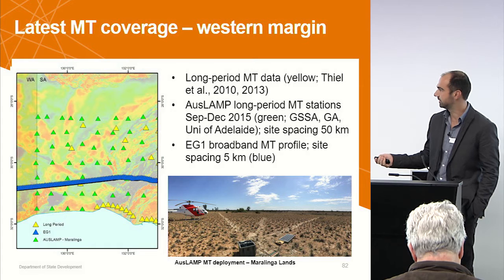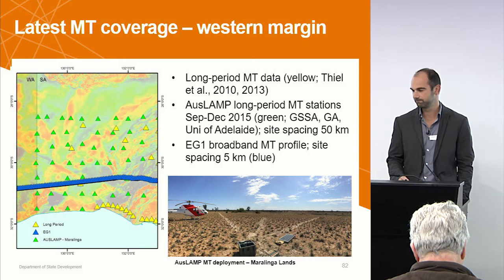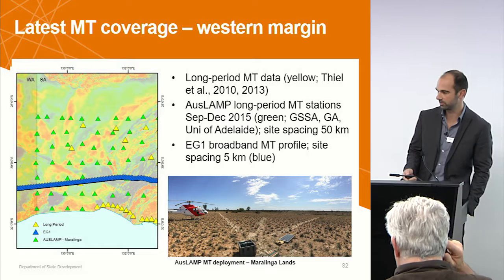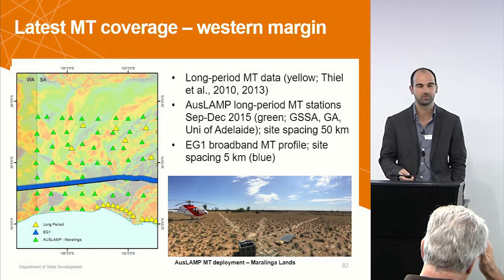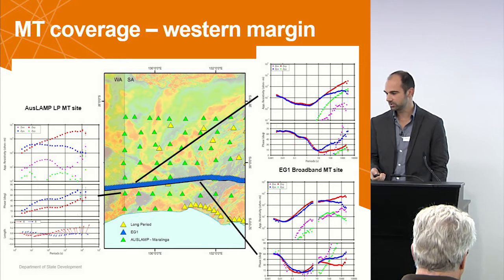What I'm mostly going to talk about today is the EEG-1 MT line, extending on from what I've already presented at the workshop last year. It goes across the Kampana Province and over into the Madura-Albany-Fraser Province further west. That's a broadband MT profile designed to image the upper crust — actually the entire crust — in much higher resolution. The site spacing is five kilometers, so any features smaller than five kilometers are probably not so well resolved.